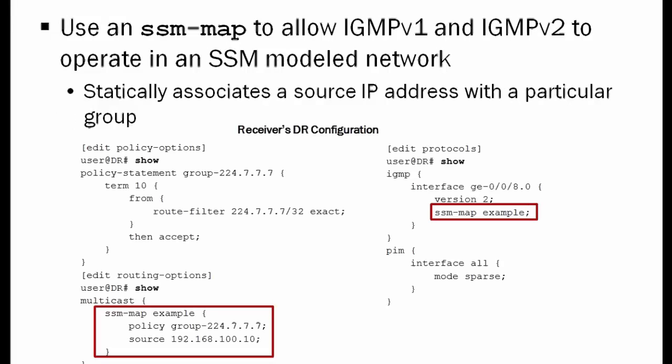Let's see the configuration that would allow that to happen. To the bottom left we see a policy being configured with a user-defined name. In the term's from statement, we configure a route filter with the actual multicast group address and accept it — a very simple policy. We then go into routing options multicast and create a source-specific multicast map — in this case called 'example' — applying the policy we created along with the source address of the multicast, combining both together in this configuration.